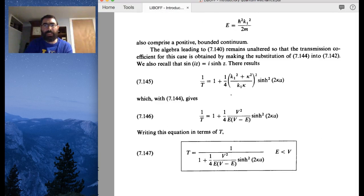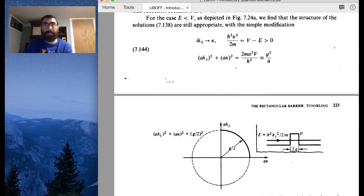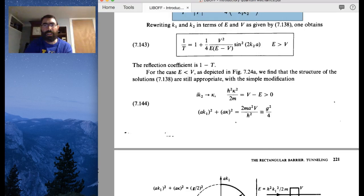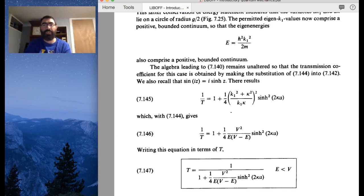So we can just take that equation and replace the k2, so now the k2 squared would be, instead of minus k2 squared, it would be plus kappa squared.